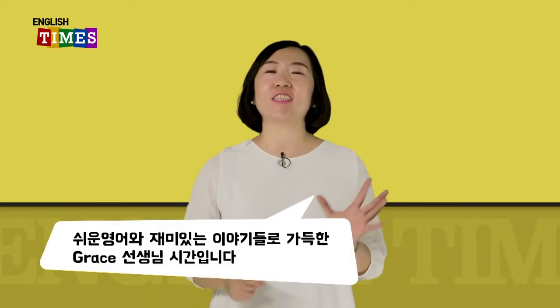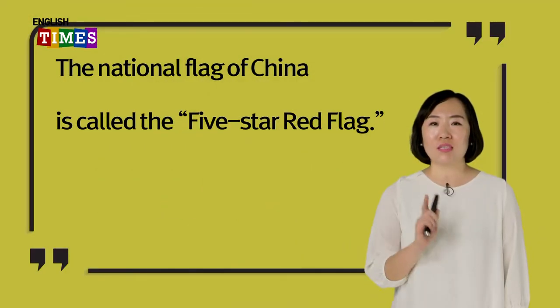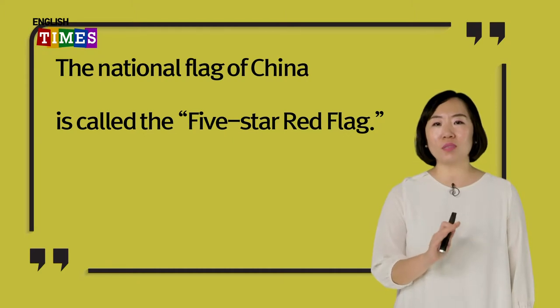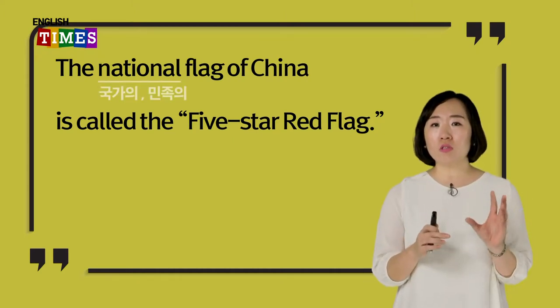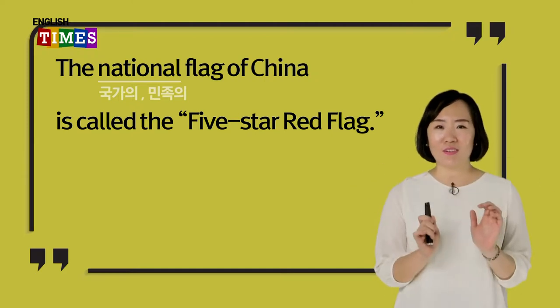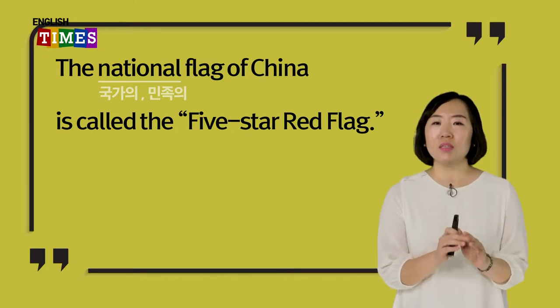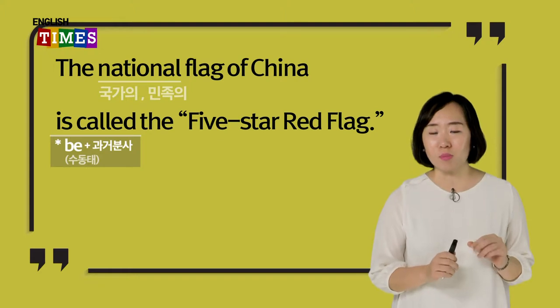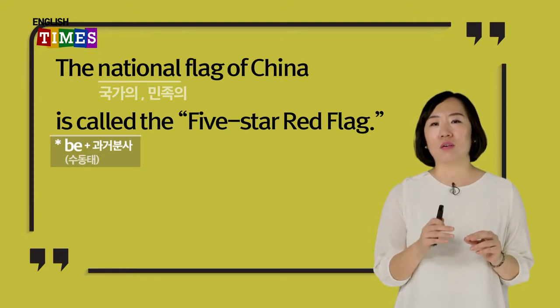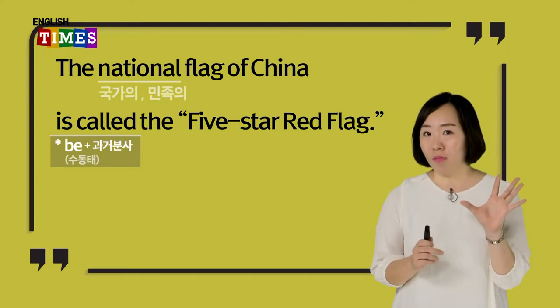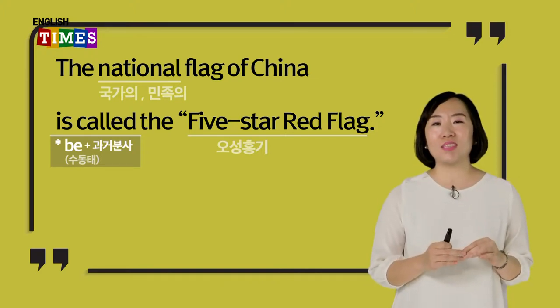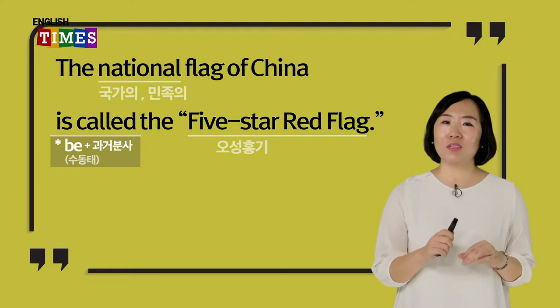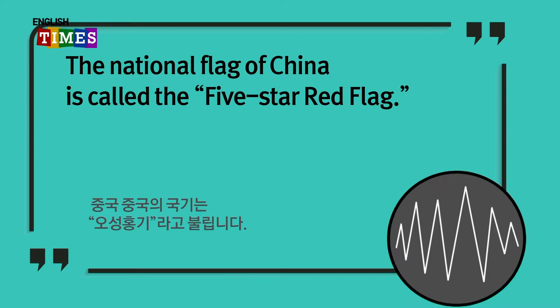안녕하세요 여러분. 쉬운 영어와 재밌는 정보들로 가득한 그레이스 선생님 시간이 돌아왔습니다. 오늘은 China, 중국에 대해서 한번 알아볼게요. 첫 번째 문장: The national flag of China is called the five-star red flag. National flag — national이 국가의, 민족이라는 뜻이죠. 플래그는 깃발이에요. 그래서 national flag 하면 국기가 되는 거죠. 중국의 국기는 is called — 수동태 표현이 나왔네요. 오성홍기라고 불리워집니다. The five-star red flag.